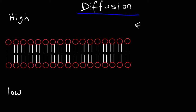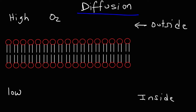Let's say that the top part is the outside part of the cell, and the bottom part is the inside part of the cell. Oxygen is a small nonpolar gas that can easily diffuse across this semipermeable membrane, which is made up of phospholipids. So oxygen is going to flow from a region of high concentration through this membrane to a region of low concentration — down its concentration gradient. That is an example of diffusion.